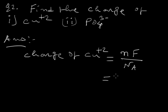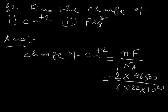So the charge of Cu²⁺ is 2 × 96500 divided by Avogadro's number, which equals 2 × 1.6 × 10⁻¹⁹. The value of n is 2 because the charge of Cu²⁺ is +2.